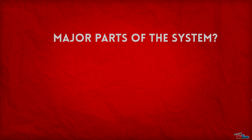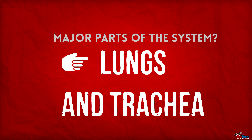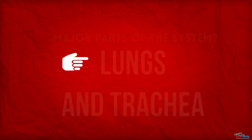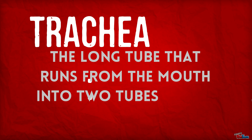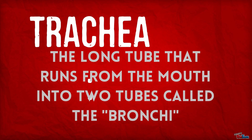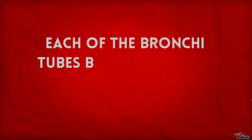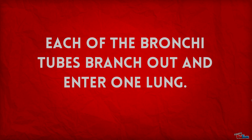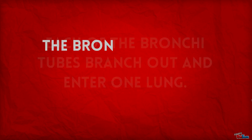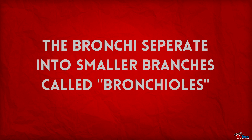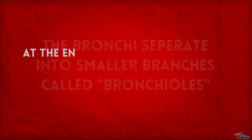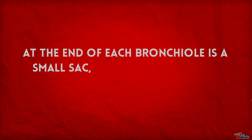The major parts of the respiratory system are the lungs and trachea. The trachea is the long tube that runs from the mouth into two tubes called the bronchi. Each of the bronchi tubes branch out and enter one lung. The bronchi separate into smaller branches called the bronchioles. At the end of each bronchiole is a small sac called the alveolus.